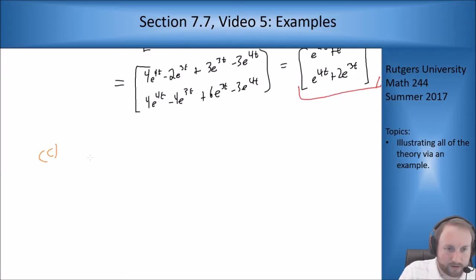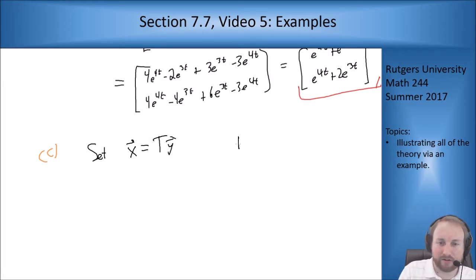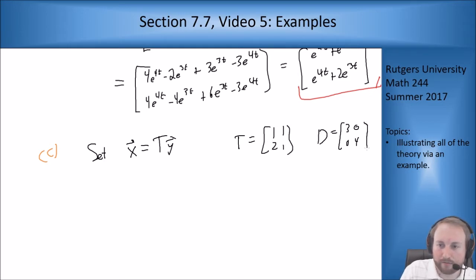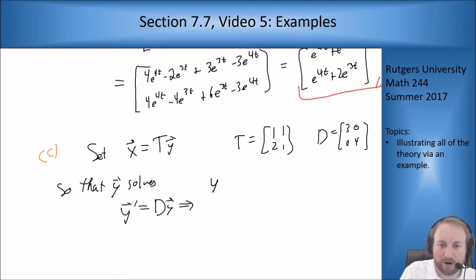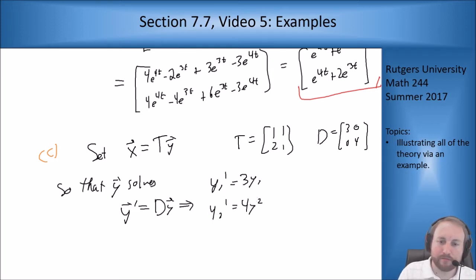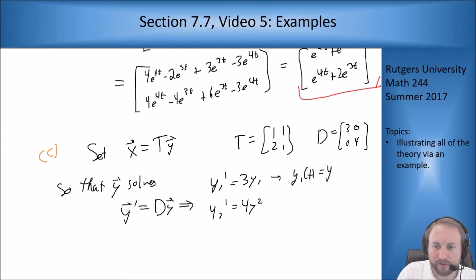Now I'll solve it using diagonalization. Setting x = T·y, where T = [[1,1],[2,1]], means y solves y' = D·y = [[3,0],[0,4]]·y. This splits into y1' = 3y1 and y2' = 4y2, giving y1(t) = y1(0)·e^(3t) and y2(t) = y2(0)·e^(4t).